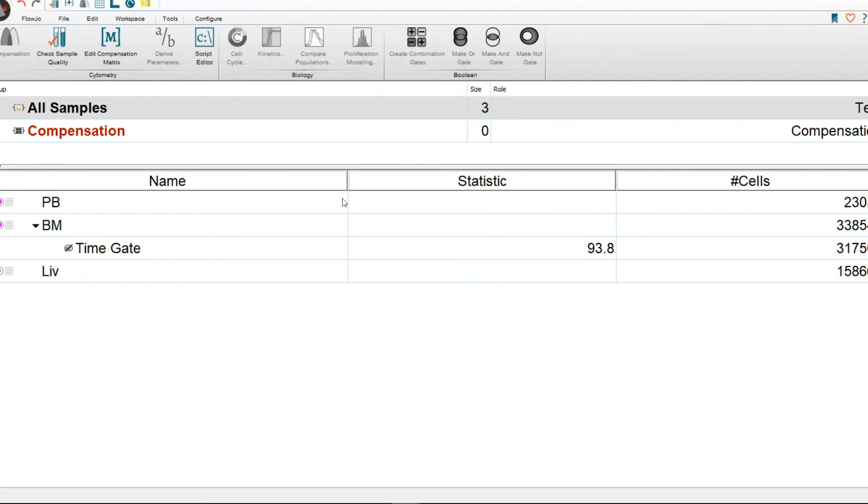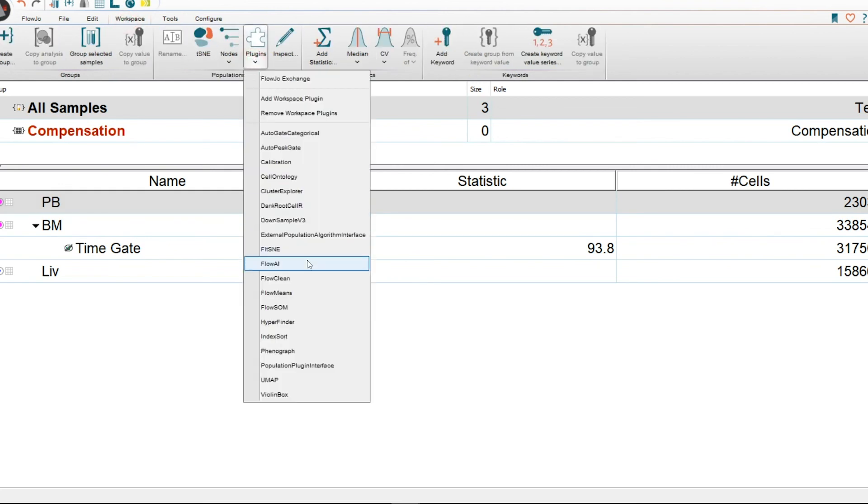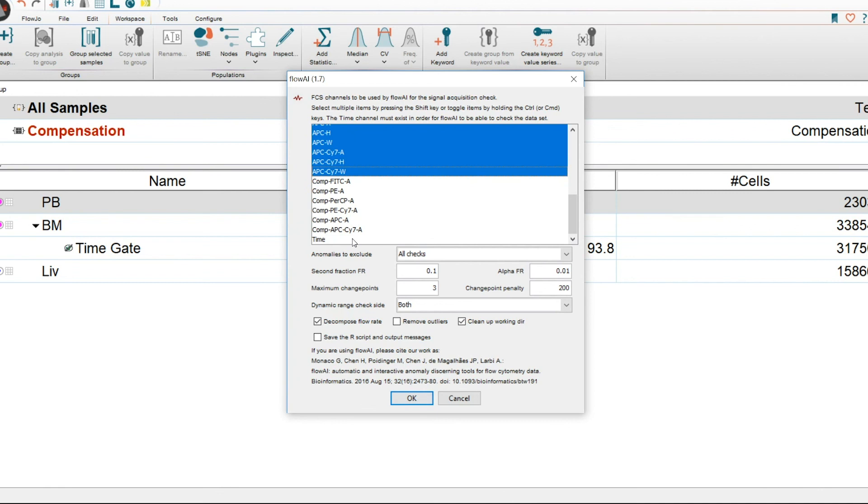Now, what about if you wanted to use some of the plugins, which is a lot faster and it's going to be far more accurate. So you click on the sample of interest, you click on workspace, click on plugins, then click on FlowAI. Select all the non-compensated parameters, like so, as well as time.